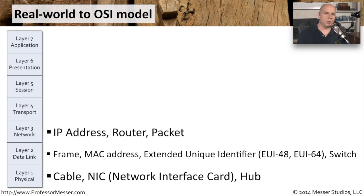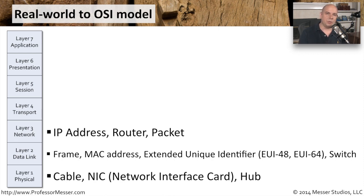The network layer is where we start to see network addresses. The OSI model expects IP addresses to be at this layer. Routers also work here, since they make their routing and forwarding decisions based on these layer 3 network addresses. We often refer to this segment of a frame as a packet — everything at layer 3 and above is inside a packet, and we're packetizing and sending this information across the network.